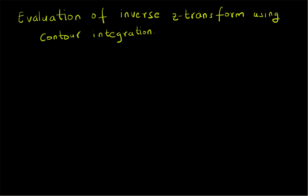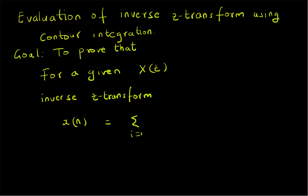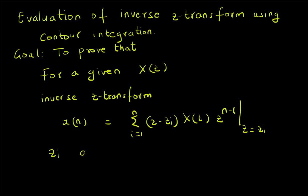Our goal is to prove the following theorem: for a given Z-transform X of Z, we can define the inverse Z-transform. The inverse Z-transform is given by X of n equal to summation i equals 1 to n of Z minus Z_i, multiplied by X of Z, multiplied by Z power n minus 1, evaluated at Z equal to Z_i.